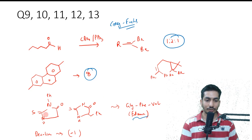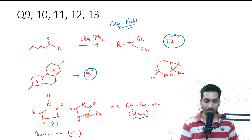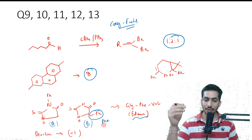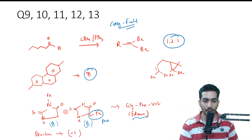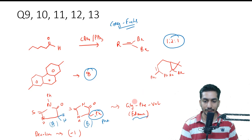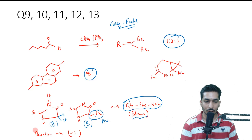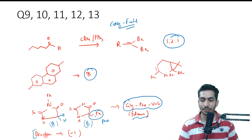There was a question on Edman degradation. Product A and Product B were given, and you need to look at the side chains. This side chain belongs to phenylalanine. Always remember that Edman degradation takes place from the N-terminal. So this molecule here will be glycine. The sequence is glycine, phenylalanine, and then the third one was valine — that is the answer: glycine, phenylalanine, and valine.